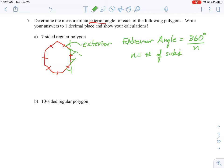So in this case we have a seven-sided polygon. The angle that we're looking for is equal to 360 degrees divided by seven, which should give us an angle of roughly 51.4 degrees.